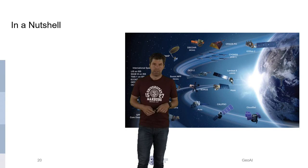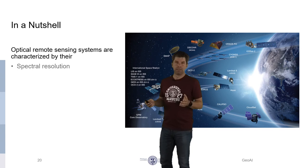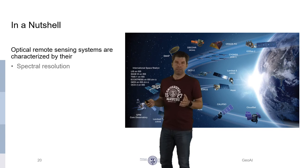So in a nutshell, optical remote sensing systems are characterized by their spectral resolution, by their spatial resolution, and by their temporal resolution. See you in the next video.